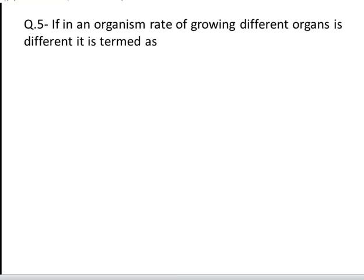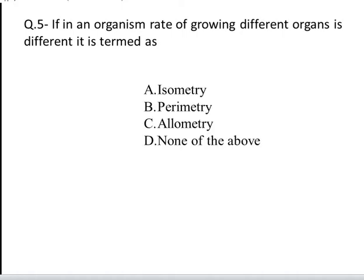The next question is: if an organism's rate of growing different organs is different, it is termed as. These are the four options: A. Malformation, B. Disruption, C. Heterogenesis, D. Transgenic defects. Yes, the correct answer is C.